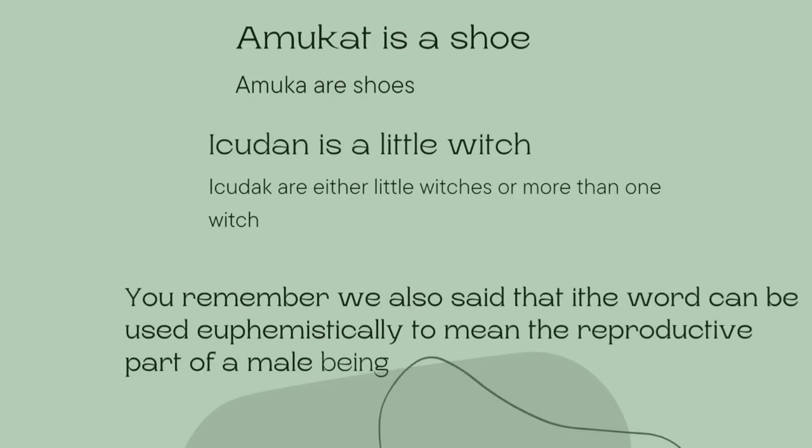E mukat is a shoe. E chodan is a little witch. E chodak are little witches, or more than one witch. Remember, we also said the word can be used euphemistically to mean the reproductive part of a male being.